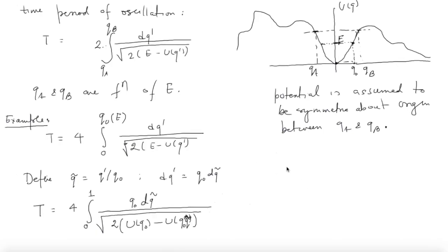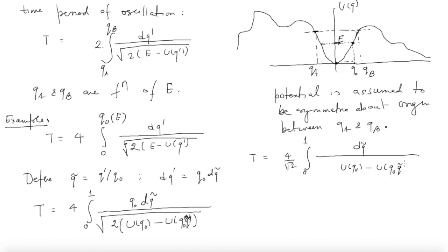I can write this as T = (4/√2) × ∫₀¹ dQ̃ / √((U(Q₀) − U(Q₀ Q̃)) × (1/Q₀²)), pulling Q₀ into the square root. All I have done is bring this Q₀ factor into the square root — nothing beyond that.